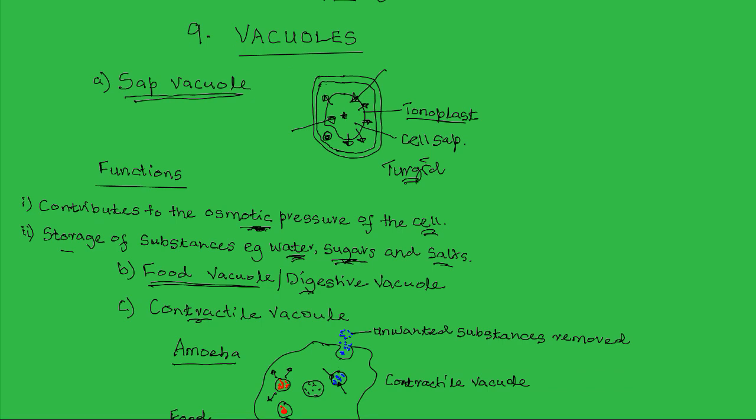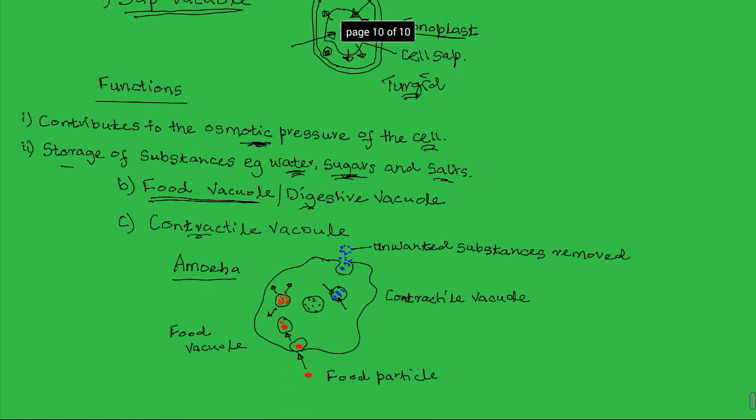The third one is a contractile vacuole. Contractile vacuole is a specialized type of vacuole that is capable of contracting to expel unwanted substances from the cell. It is found in some unicellular organisms such as amoeba and paramecia, where it is used to remove excess water and waste products. You can see here in this illustration, this is an amoeba cell.